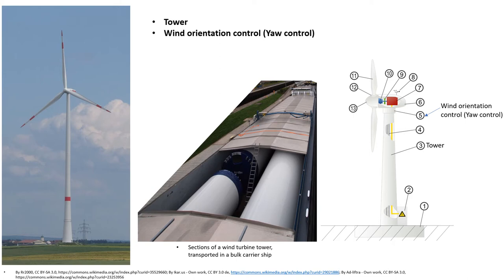The power output losses can simply be approximated. Particularly at low to medium wind speeds, yawing can make a significant reduction in the turbine output, with wind direction variations of plus and minus 30 degrees being quite common and long response times of the turbines to changes in wind direction. At high wind speeds, the wind direction is less variable.